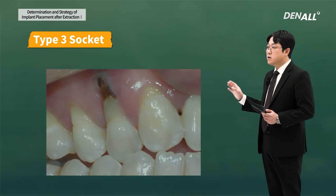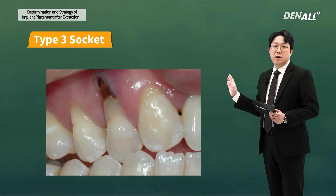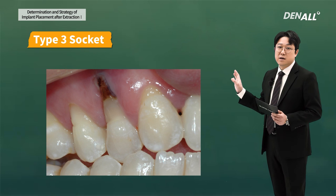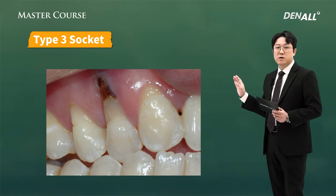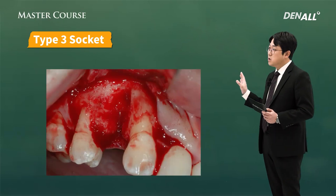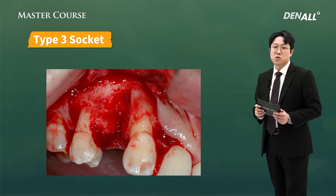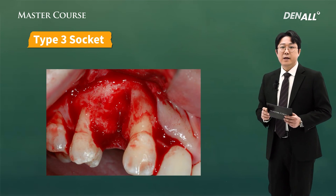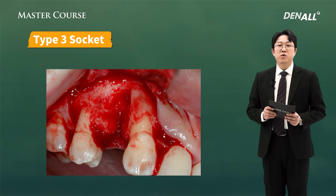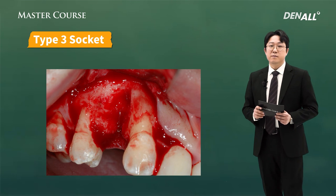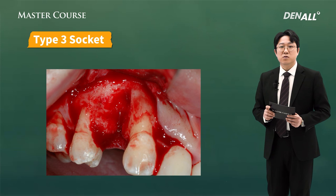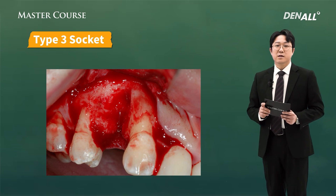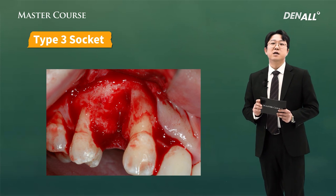This is the situation — in tooth number 14, there is soft tissue resorption buccally. When I open the flap, there is also bone resorption. I am going to complete my explanation about extraction socket, and I am going to talk about the treatment strategy for each case in the next lecture as we look at clinical cases.